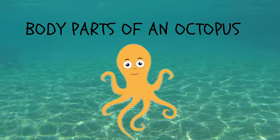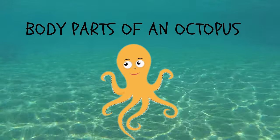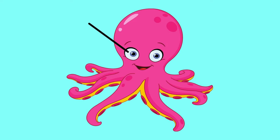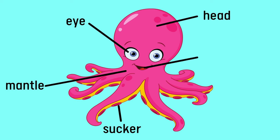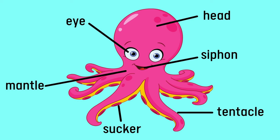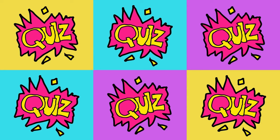Now here's the body parts of an octopus. Eye. Mantle. Sucker. Siphon. Tentacle.